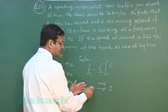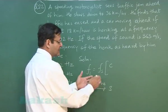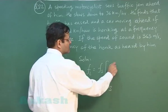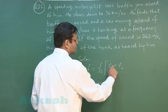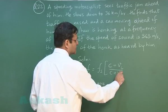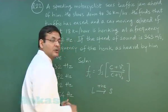So the velocity of listener will also be taken as positive. The velocity of source will also be taken as positive. So c plus velocity of the listener, c plus velocity of the source, and this will complete your expression.